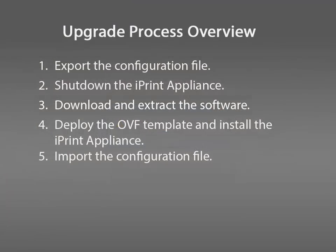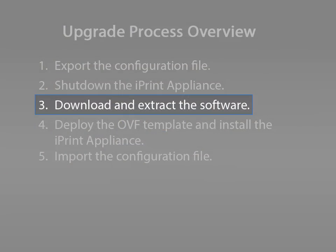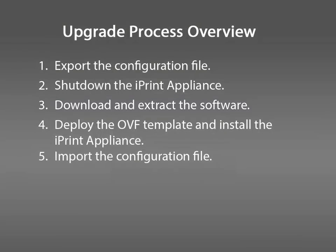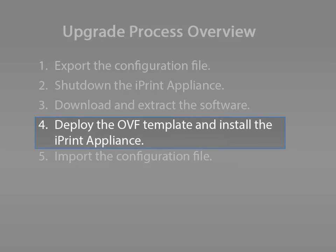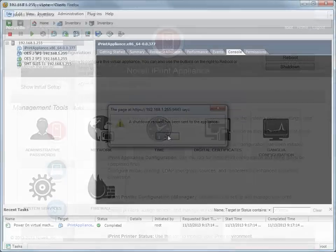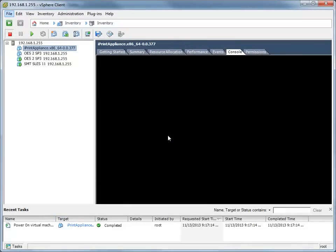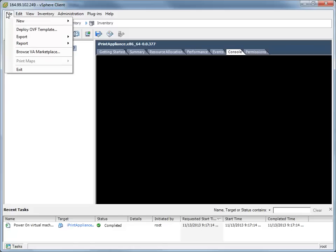Next, download the new iPrint appliance software to your management workstation and extract the file. After you have downloaded and extracted the new iPrint appliance software, deploy the OVF template and install the iPrint appliance. In the vSphere client, click File, then click Deploy OVF Template.